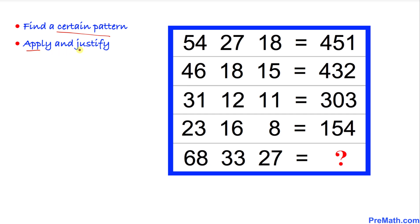If we look closely, we can see if we subtract 54 minus 27, it's going to give us 27, and then we are going to add 18. That is going to give us 45. Let's focus on these first two digits. Likewise, when we look at 46 and then 18, we are going to subtract. That is going to give us 28.